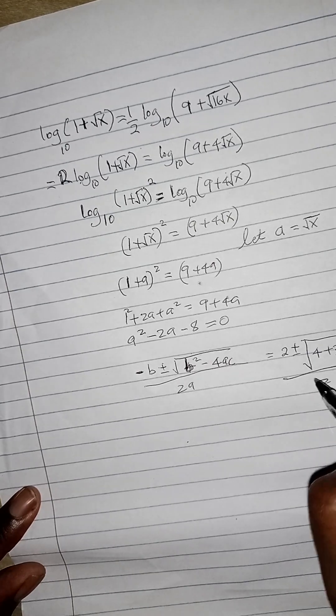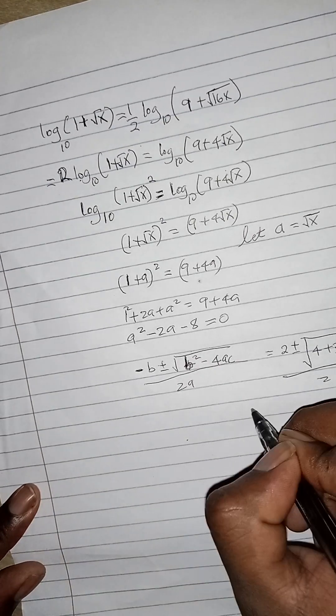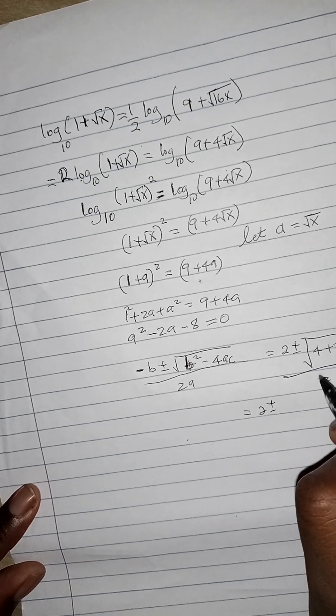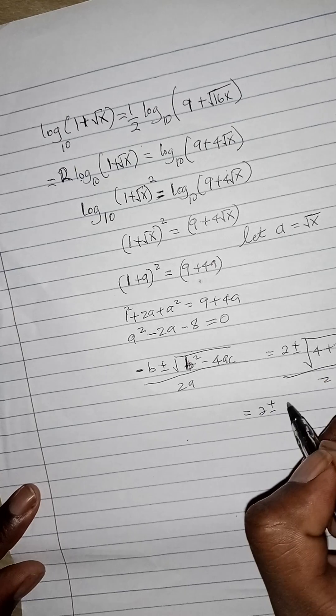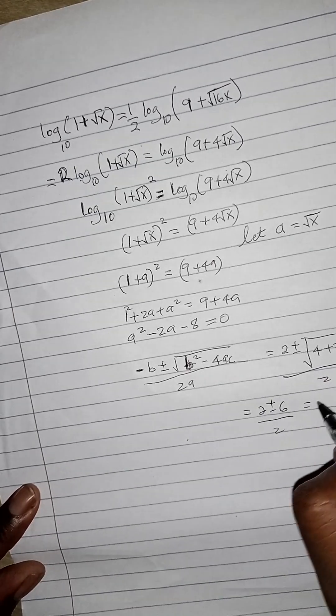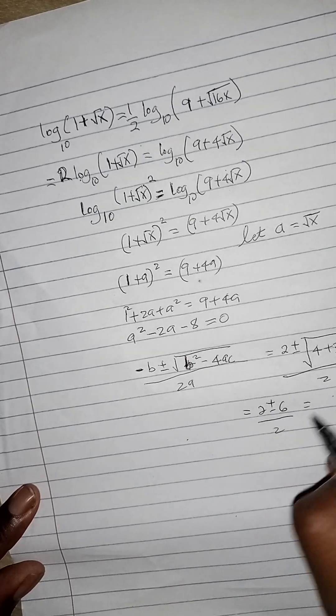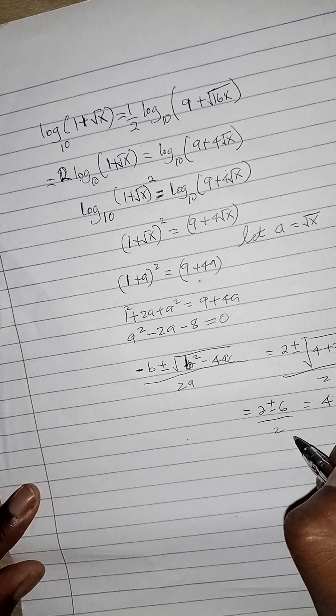Divided by 2a, which is basically 2 times 1. So here you're going to get two values. So it is 2 plus or minus, this is that 6, the square root of that is 6. So you get the value of a as either 2 plus 6 is 8 divided by 2 is 4, or 2 minus 6, negative 4 divided by 2, negative 2.